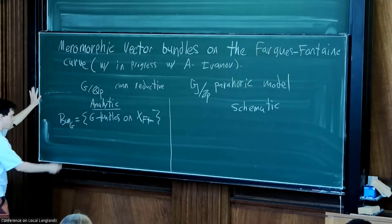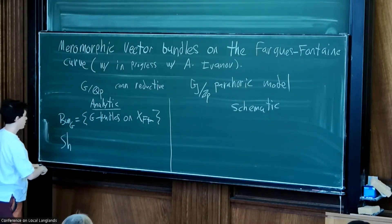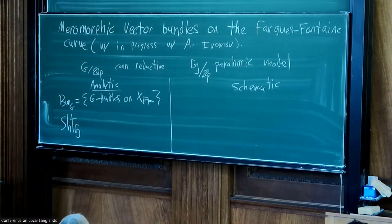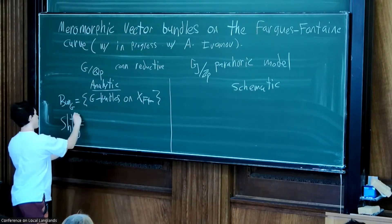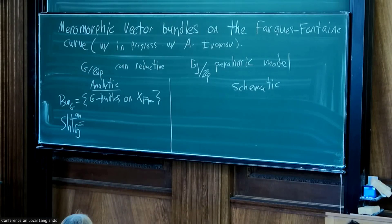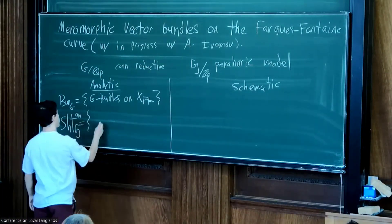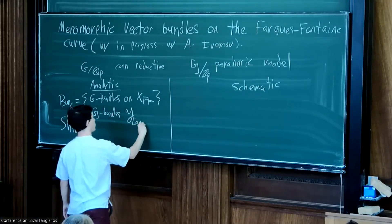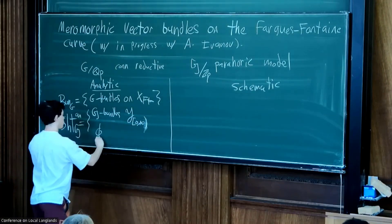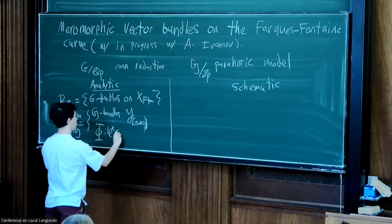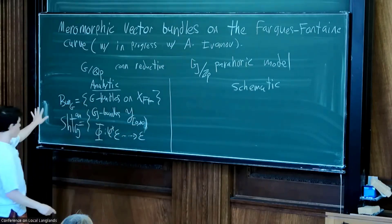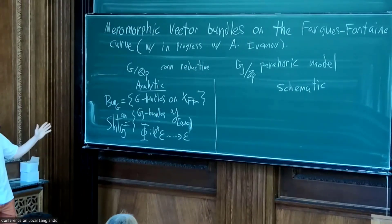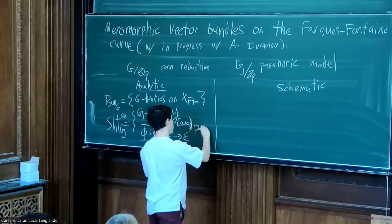We also want to consider a second object: the stack of shtukas with this fancy G-structure. These are G-bundles in the version of the Fargues-Fontaine curve that we call Y_{[0,∞]}, together with a Frobenius structure. I want to work in characteristic p, so I want the pole to always be at p equals zero.